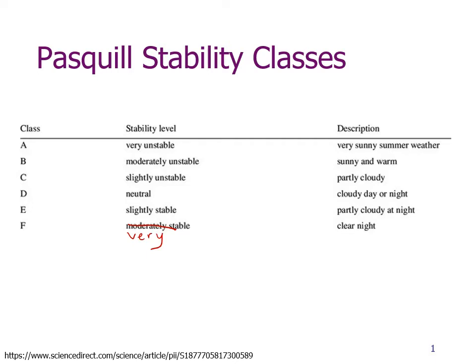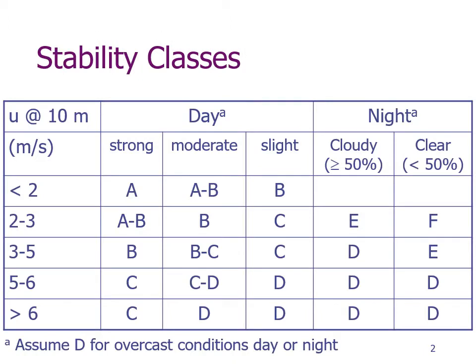One class to make note of is D, which is neutral conditions, and that is a cloudy day or night. You can determine the stability class based on the current wind speed and amount of solar radiation.